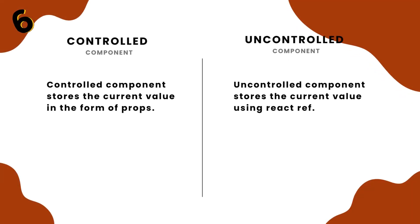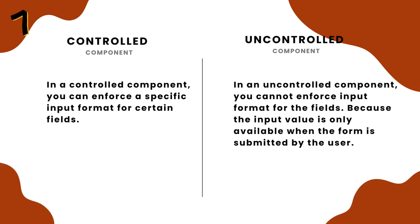Number 6: a controlled component stores the current value in the form of props, while an uncontrolled component stores the current value using React Ref. Number 7: in a controlled component, you can enforce a specific input format for certain fields, while in an uncontrolled component, you cannot enforce input format for the fields, because the input value is only available when the form is submitted by the user.